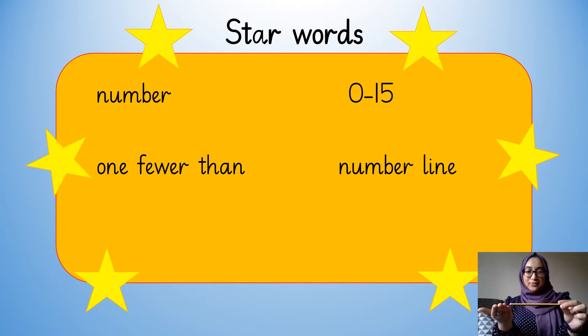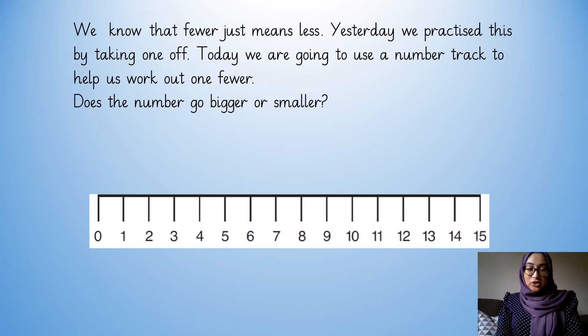So, it's time for our star words. Number, and our numbers from zero to 15. One fewer than. Number line. So we know that fewer just means less. Yesterday we practiced this by taking one off.